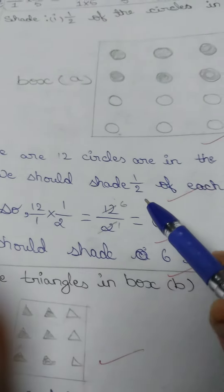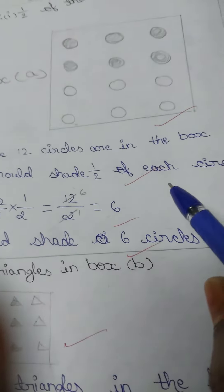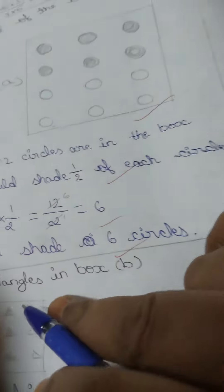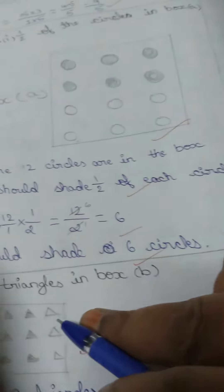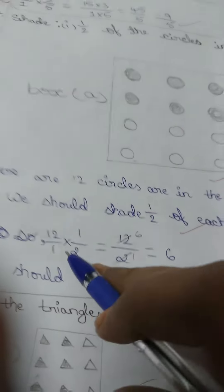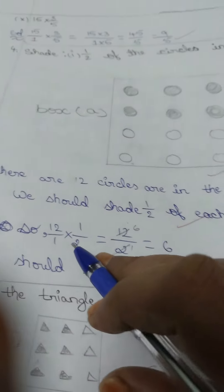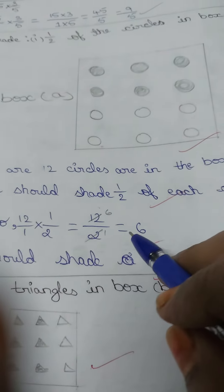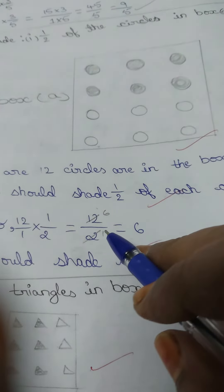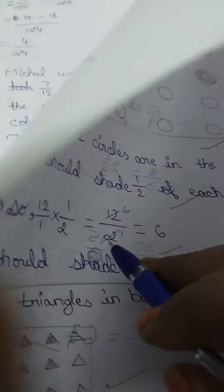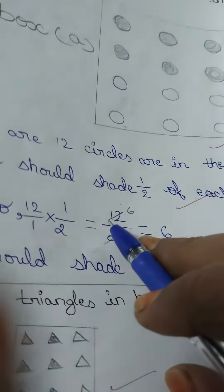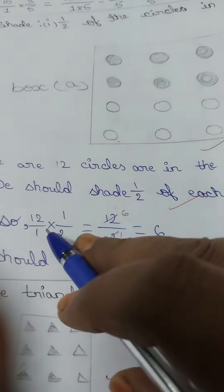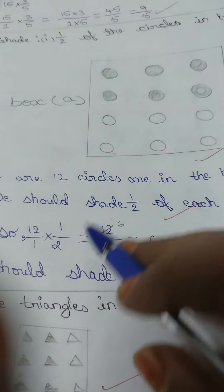We should shade half of each of the circles. So, 12 by 1, divided by 2. We should share half of each of the circles.